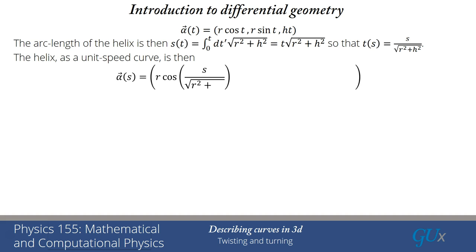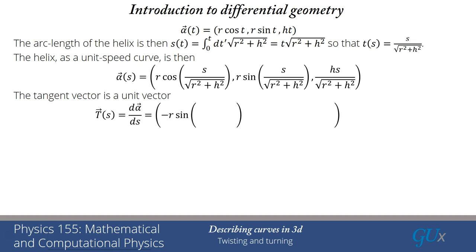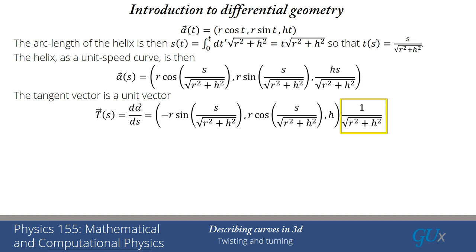With the arc length parametrization, the helix becomes R cosine of S over the square root of R squared plus H squared, R sine S over that square root, and HS over that square root. Taking the derivative with respect to S automatically gives us the tangent vector, since this is a unit speed curve. The derivative gives each of the three terms multiplied by 1 over square root of R squared plus H squared.